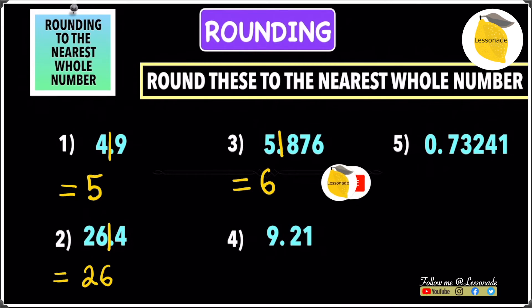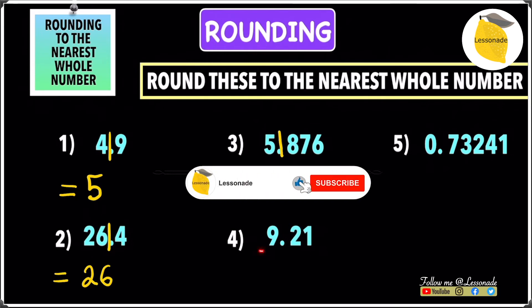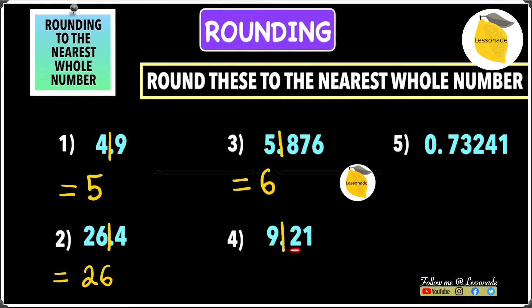Let's move to 9.21. 9 is your whole number, and then you have the 2 after the line. If the digit after the line is 5 or above... it's not, so leave 9 as it is. Your answer will be just 9.